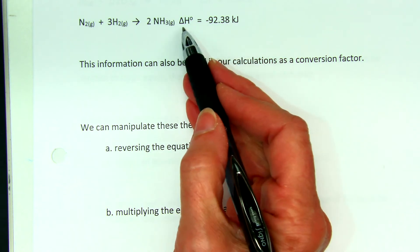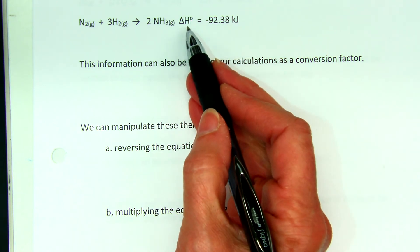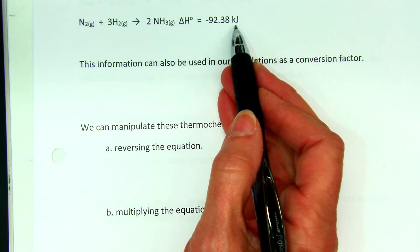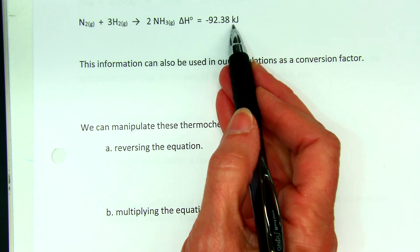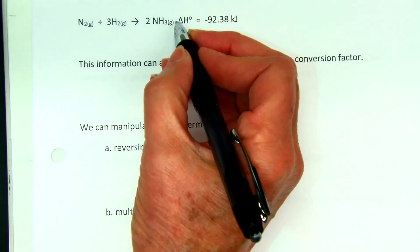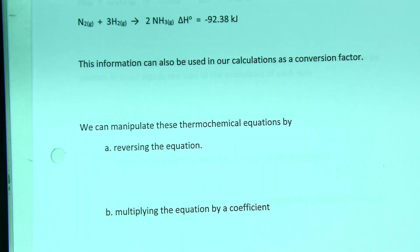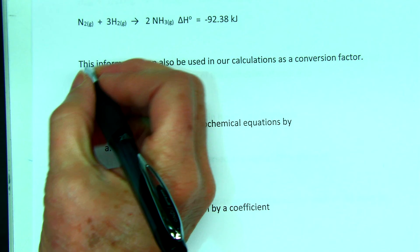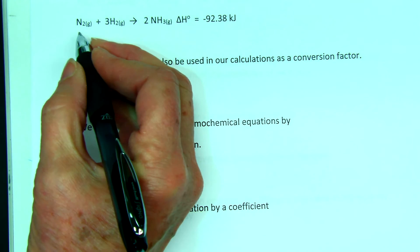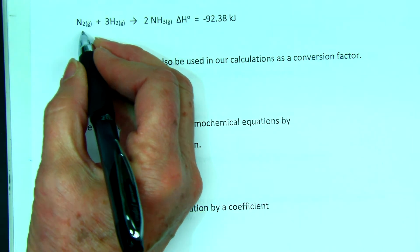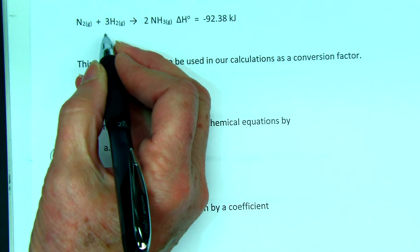So this is just some additional information that gets written down at the end of the equation. This is not listed as a product because there's no little plus sign in there. It's just listed next to the equation. And we can now use this information as a conversion factor in our calculations.